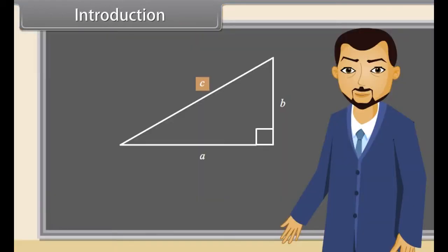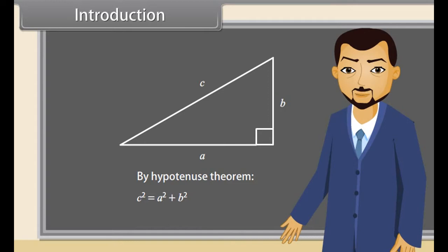Yes, C is the hypotenuse. So by the hypotenuse theorem, C squared is equal to A squared plus B squared. We will prove some trigonometric identities.